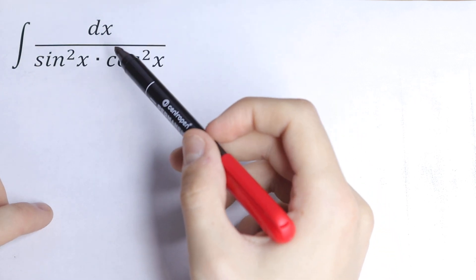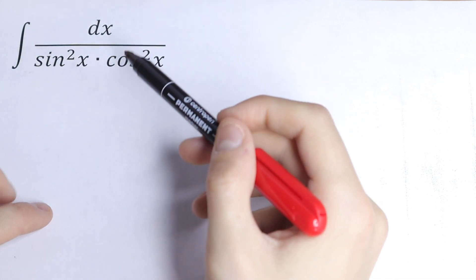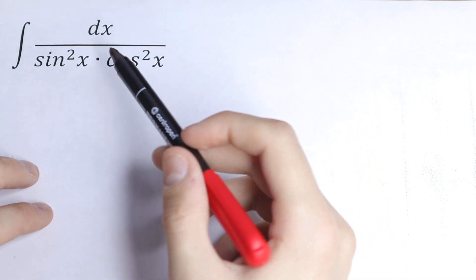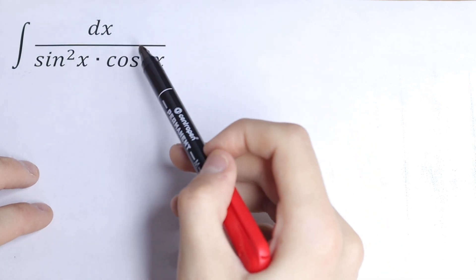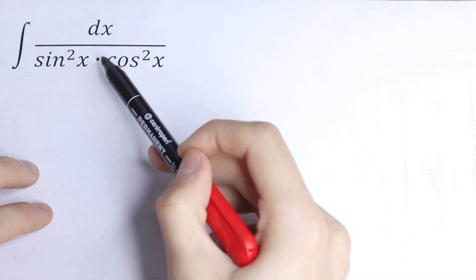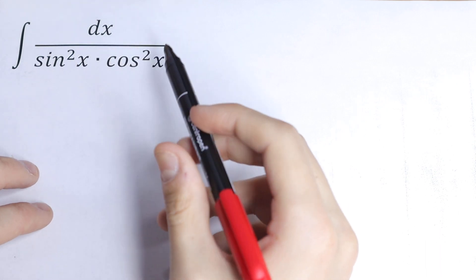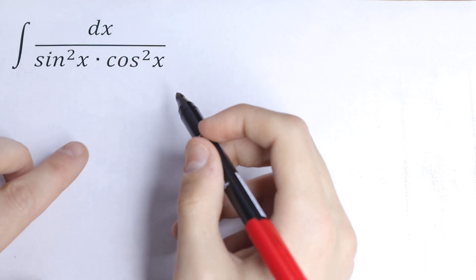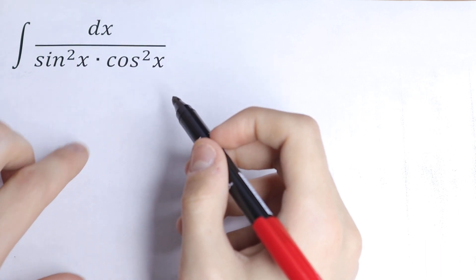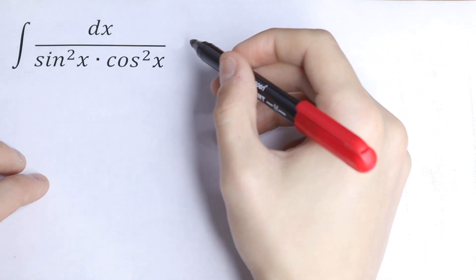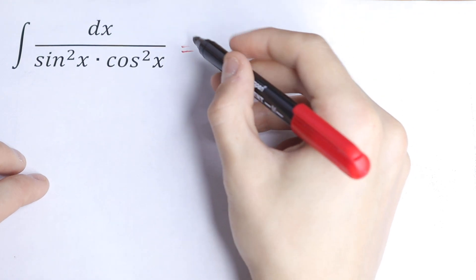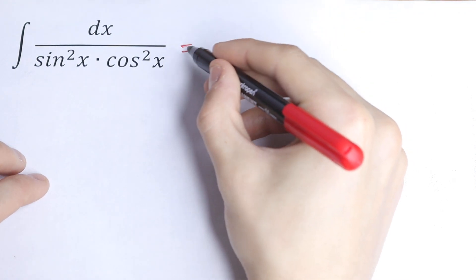On the first side, this integral is real hard because we have second power in our denominator, we have a product, we have sine and cosine. But we can simplify this easily, so I want to suggest a little trick right here.